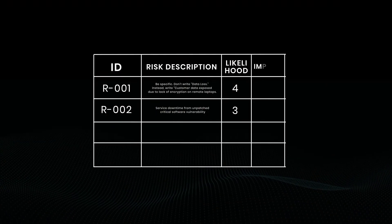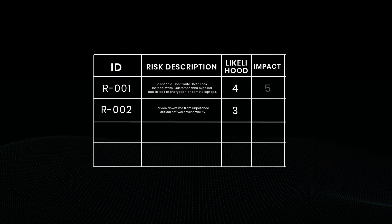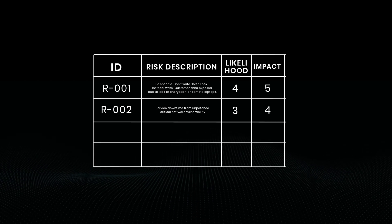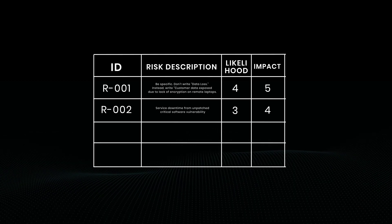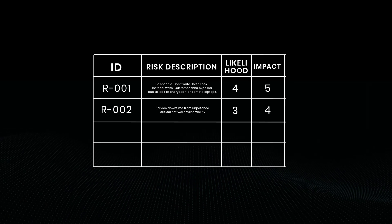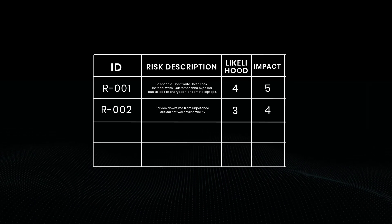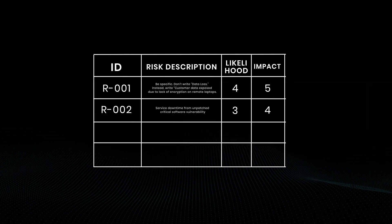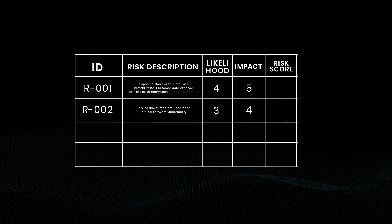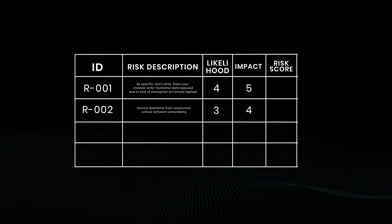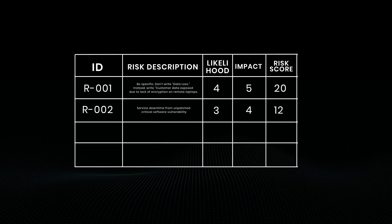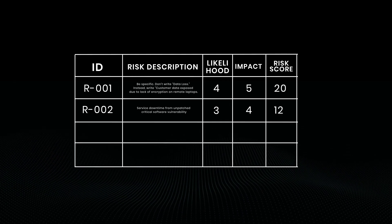Number four is impact. Again, it's a scale of one to five. One equals minimal inconvenience, three equals regulatory scrutiny and operational slowdown, five equals major reputation damage and financial losses. The fifth column is risk score. Multiply likelihood and impact — for example, four times five equals 20. Higher scores equal higher priority. This is how you triage.